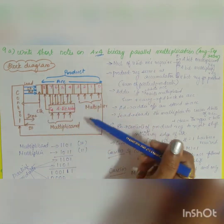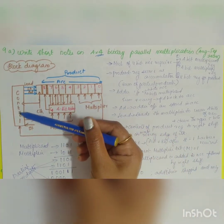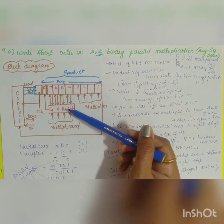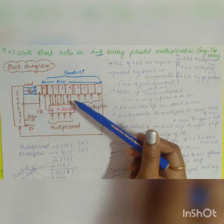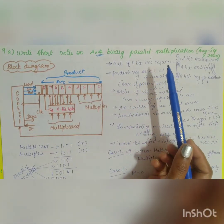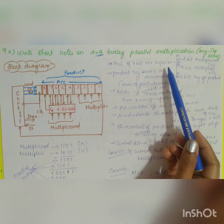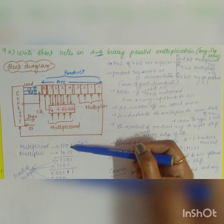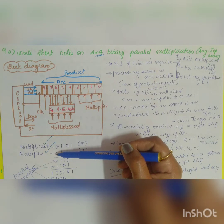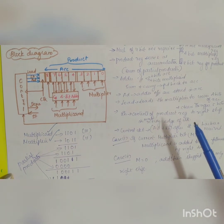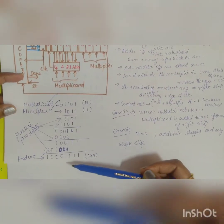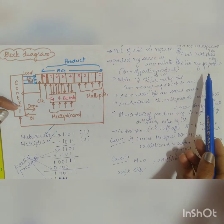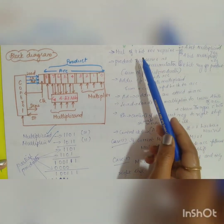This gives the overall block diagram of your parallel multiplier. The three main units are: first, the control unit; second, the accumulator, which consists of eight bits and an extra bit; and third, a four-bit adder. The multiplication of four-bit numbers requires a four-bit multiplicant register, a four-bit multiplier register, and an eight-bit product register to store the overall product.